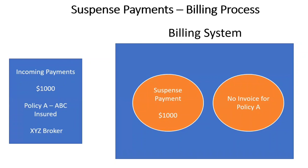Now there are various options once the money is in suspense. Either you can apply it once you know the correct policy number, or once you correct the actual policy number. However, sometimes even after three or four weeks the correct policy number will not be available in the billing system, or there could still be some kind of discrepancy. In those scenarios, you can even disperse this payment — for example, if the one thousand dollars is sitting in suspense for three or four weeks, you can disperse it back to the broker.